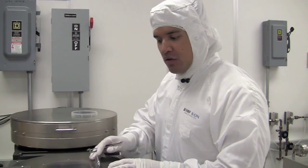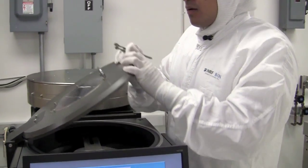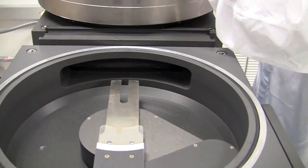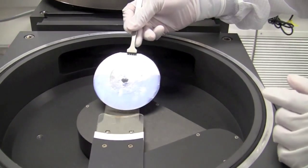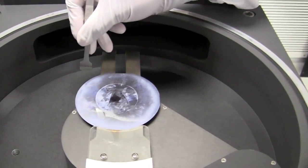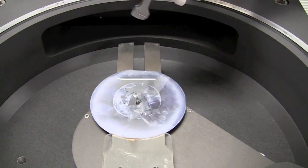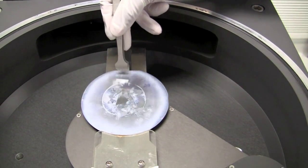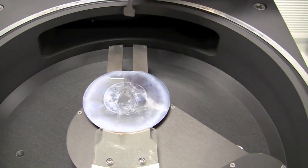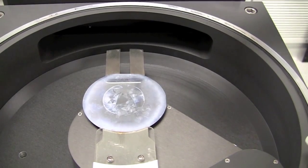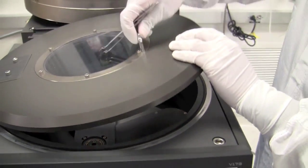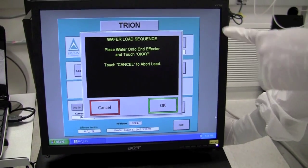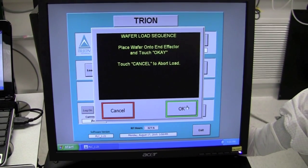So, once our chamber has vented, we can now begin to load our sample. You open this hatch and here we have the reactive arm with a space for our sample. To load our sample, you simply use your tongs and you can put it in. Now, technically it doesn't matter how you orient the sample, as long as it's touching this little flat. However, for our benchmarks and for our studies, we prefer the flat to be facing this way toward the chamber. So, once it's situated there, we close the hatch and on the screen, we confirm that the wafer is on our end effector and hit OK.